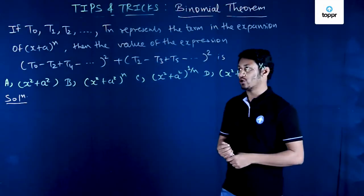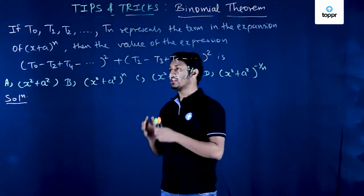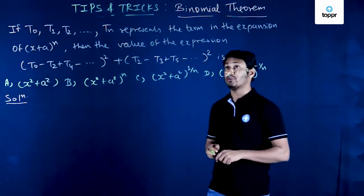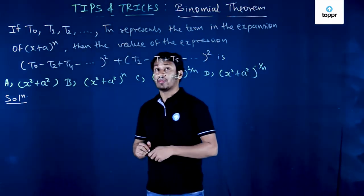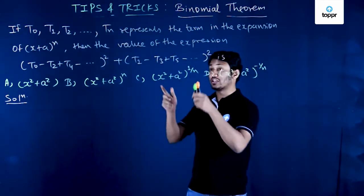Let's take up the question from chapter binomial theorem. The question says if t0, t1, t2 up to tn represent terms in the expansion of (x+a)^n, then we have to find out the value of the given expression.